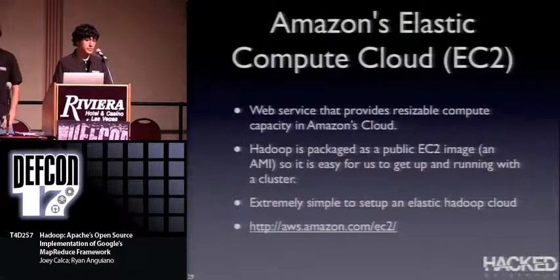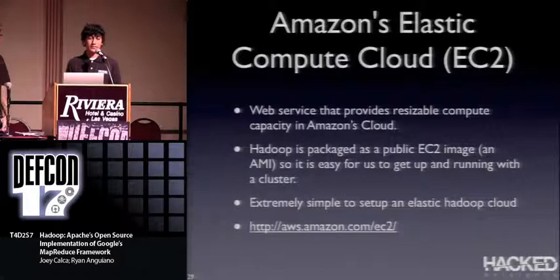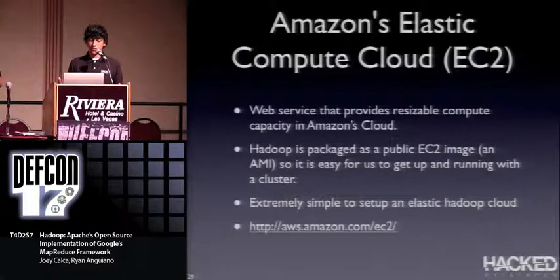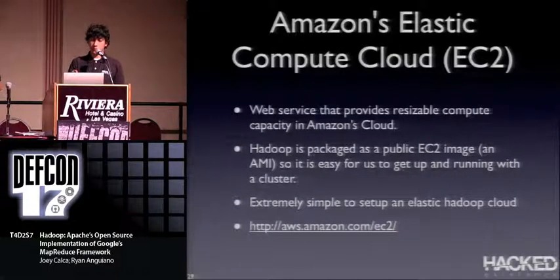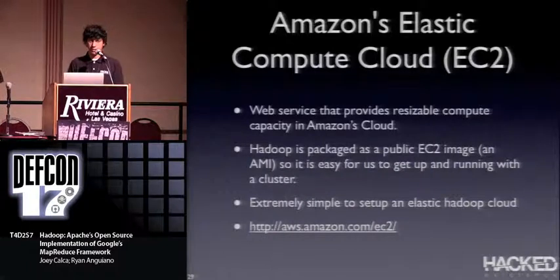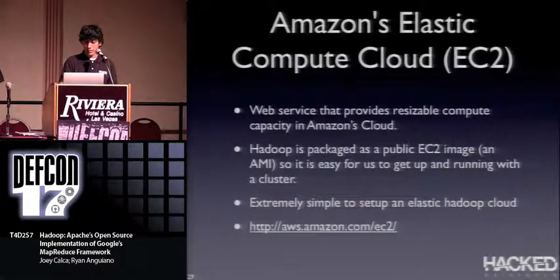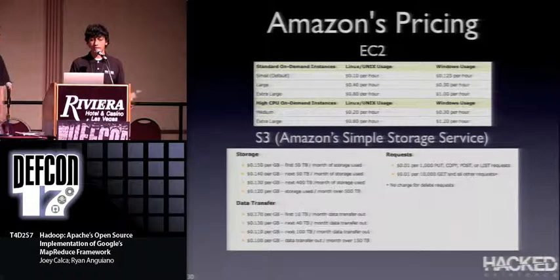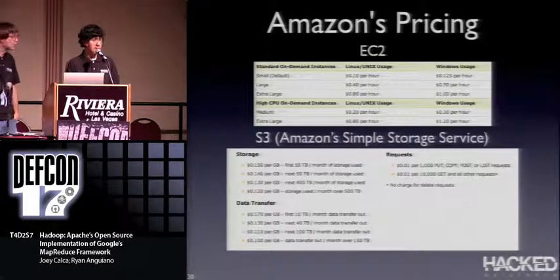Amazon EC2 is a web service where you can purchase a resizable compute cloud in their data center. Hadoop is packaged as a public EC2 image, making it very easy to set up — you go to the web page, choose how many nodes you want, click Hadoop, click load, and you're in Hadoop ready to run jobs. Pricing: 10 cents per hour for a basic small Linux node, so 100 nodes would be 10 cents times 100. You also pay for storage when accessing your data.